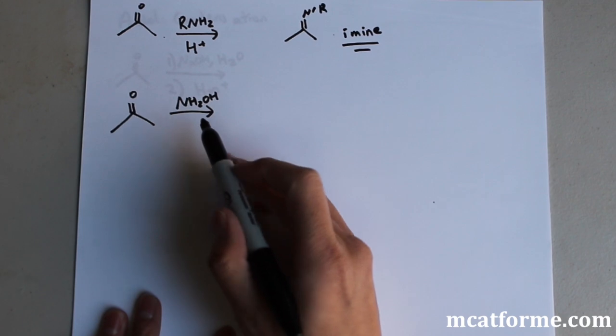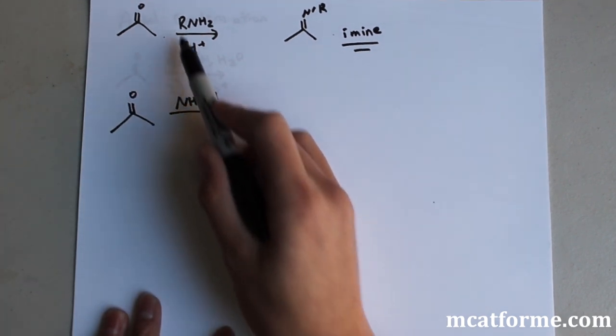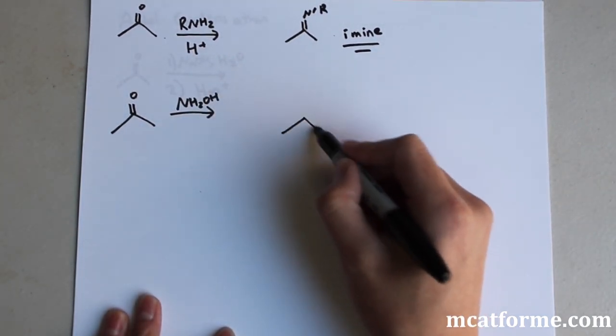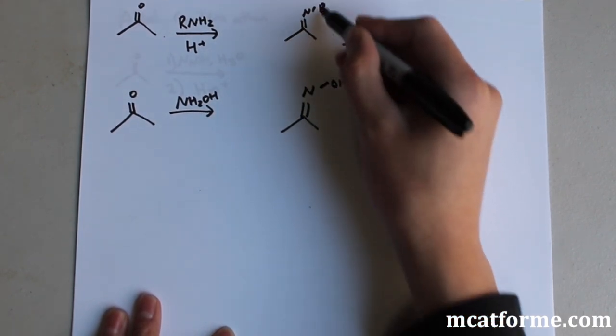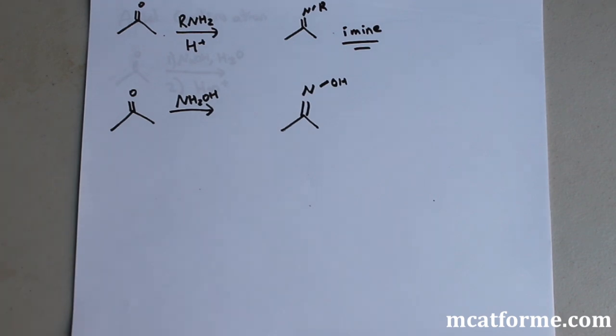This one should just be the same thing. But all we're doing is this R group is now an OH, so we'll see what will happen here. All that's going to happen is that OH will replace that R group. So R group is just anything generally, we're talking about methyl, ethyl, stuff like that, just carbon chains. But in this case, this OH can also act as that R group.